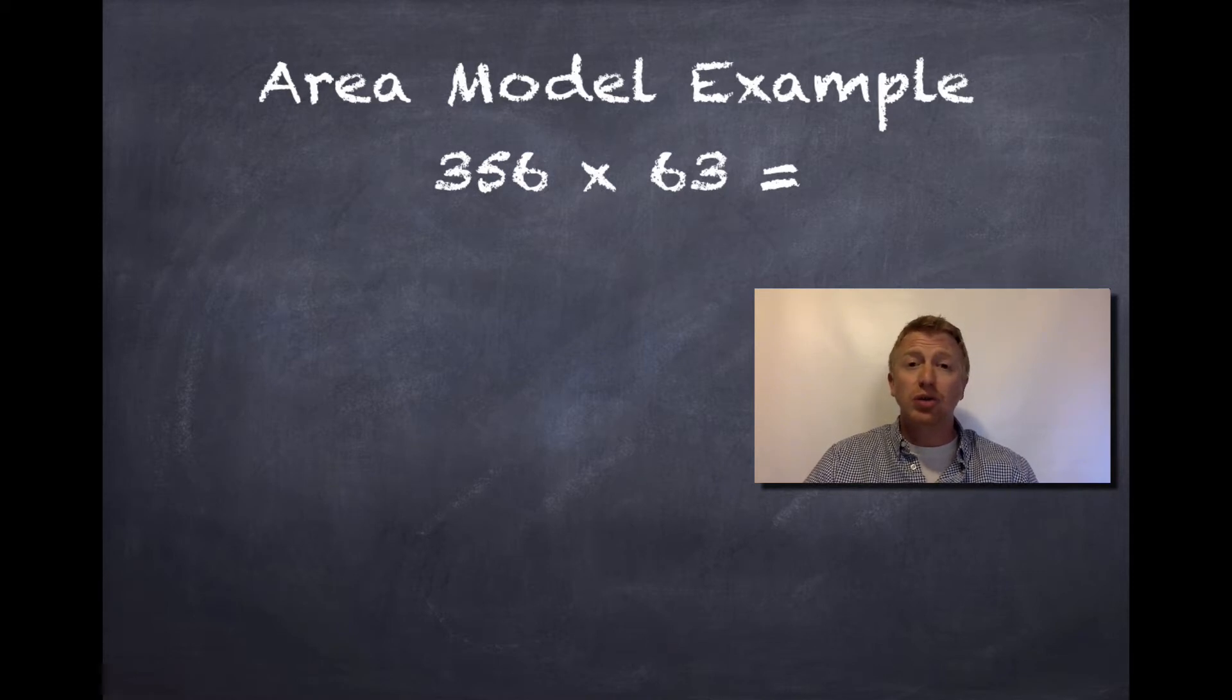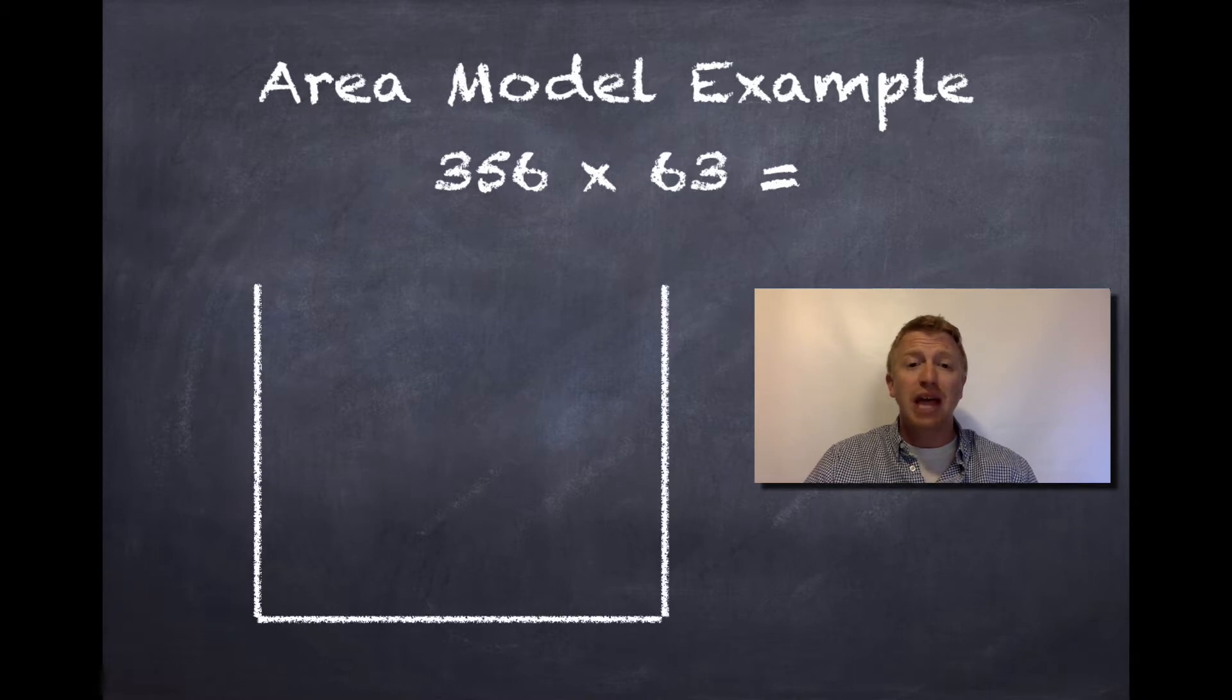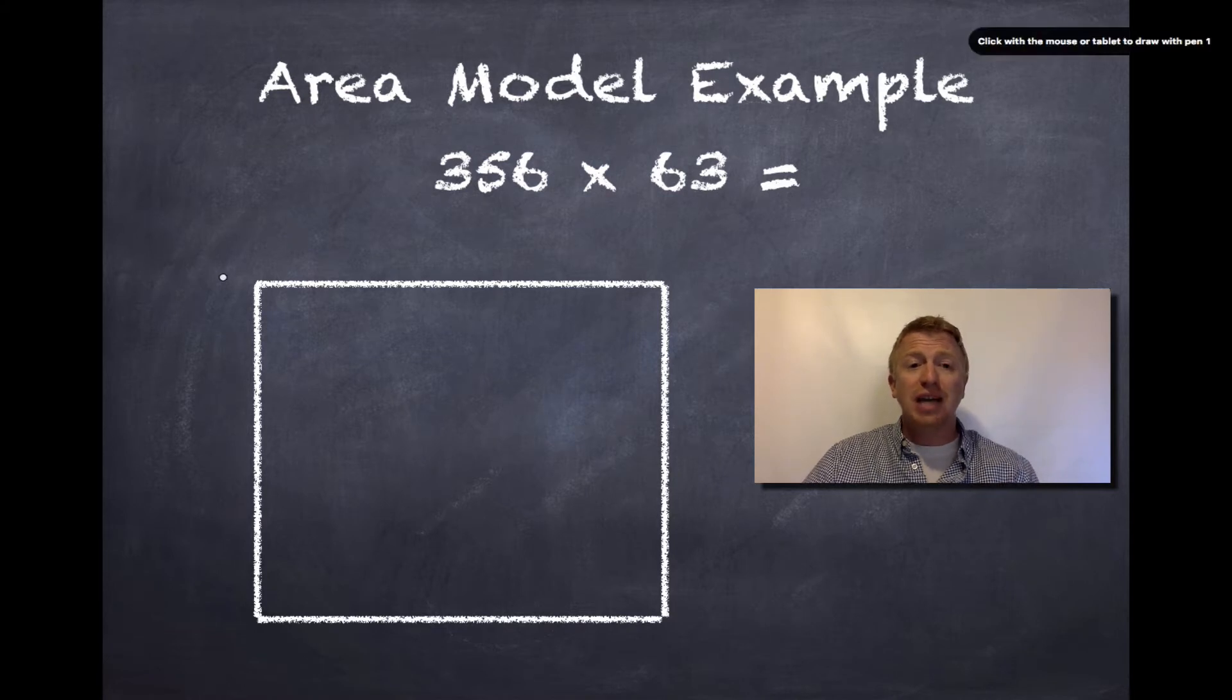Before we actually start doing any math, we need to create a giant rectangle that we can do our work in. Now that we have our rectangle, I'm ready to set up my problem. I'm going to be putting 356 down this vertical line, and I'm going to be putting 63 along the top.